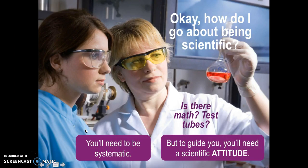This is part two of the need for psychological science. We understand we need to have scientific method and critical thinking. So how do I go about being scientific? You need to be systematic, but in order to guide you, you'll need a scientific attitude. Let's talk about the three parts of the scientific attitude.